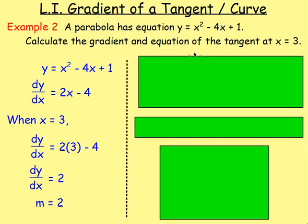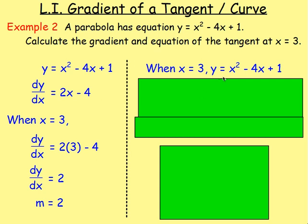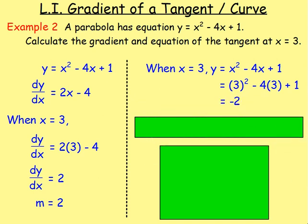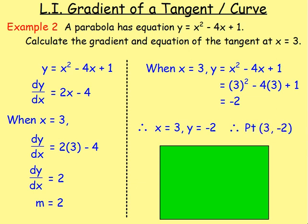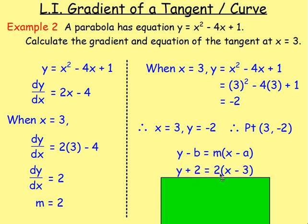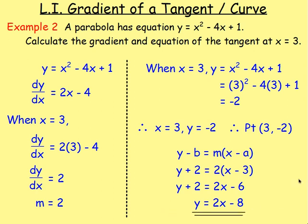We're asked for the equation of the tangent — gradient point equation. The gradient is 2. We need the point, so we need to work out y. With x equals 3, sub into y equals x squared minus 4x plus 1: that's 3 squared minus 4 times 3 plus 1, which gives negative 2. So our point is (3, negative 2). Using y minus b equals m bracket x minus a: y minus negative 2, in other words y plus 2, equals 2 bracket x minus 3. Multiply out the brackets and subtract 2 from both sides to get the equation of the tangent.